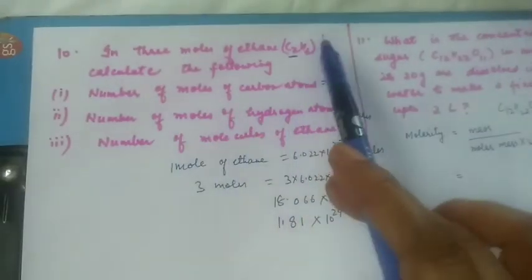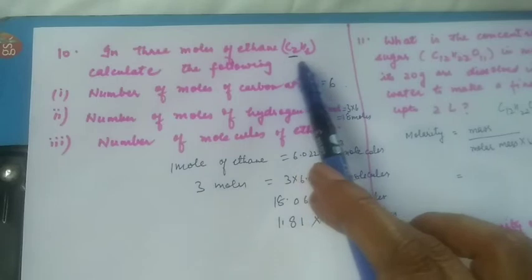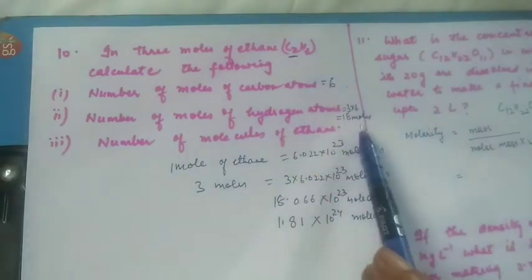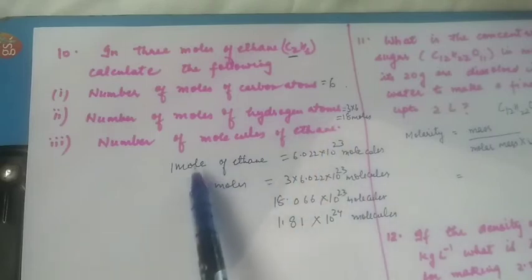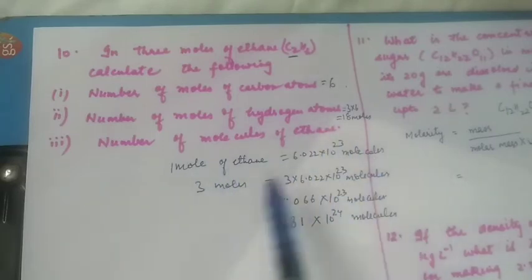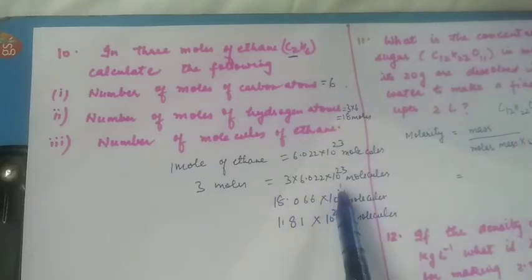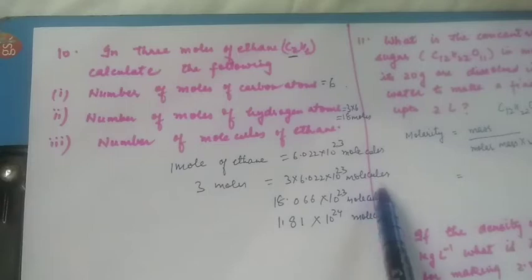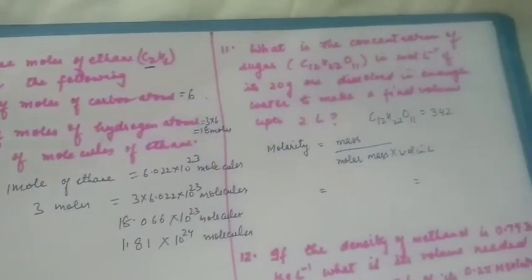Similarly, number of moles of hydrogen atoms: in one mole there are six moles, so in three moles there will be three into six, eighteen moles. Number of molecules of ethane: one mole has 6.022×10²³ molecules, so three moles will have 3×6.022×10²³ molecules, which is 1.81×10²⁴ molecules.